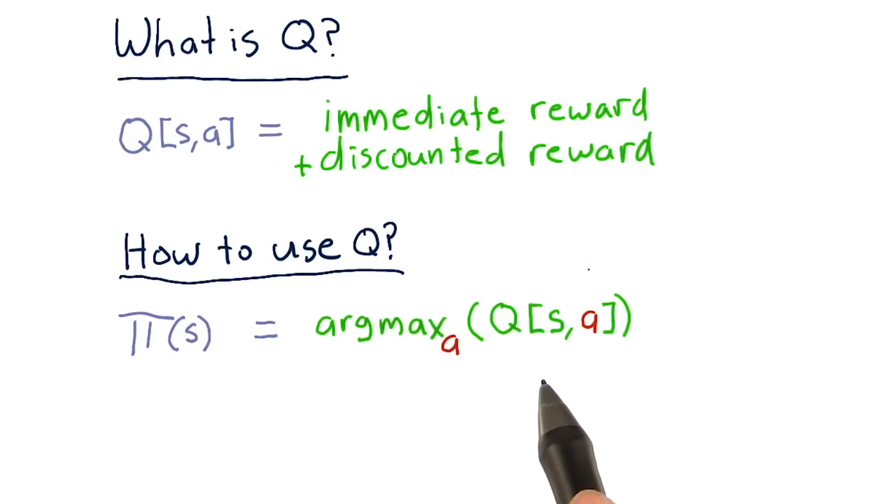Here's how it works. We're in state S and we want to find out which action is the best. Well, all we need to do is look across all the potential actions and find out which value of Q[S,A] is maximized. So we don't change S, we just step through each value of A.